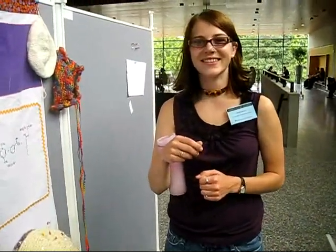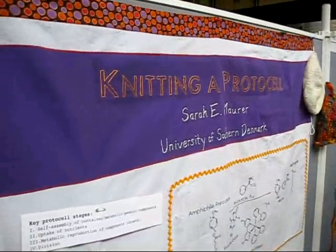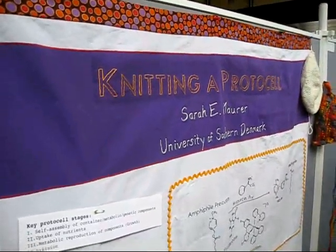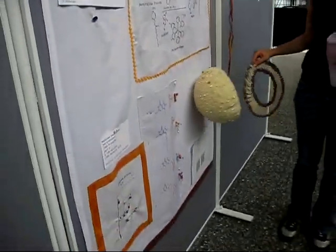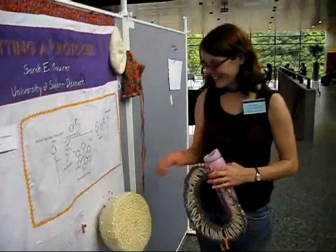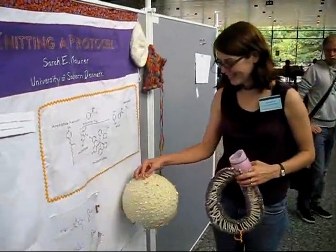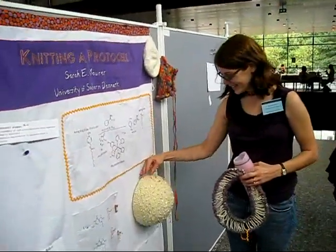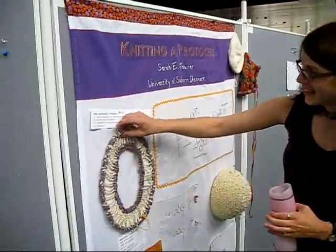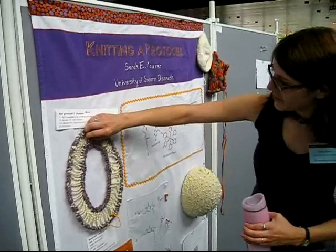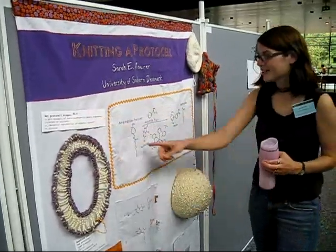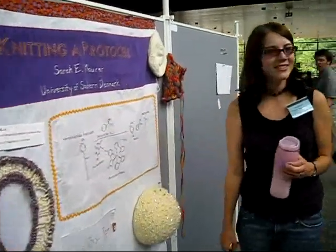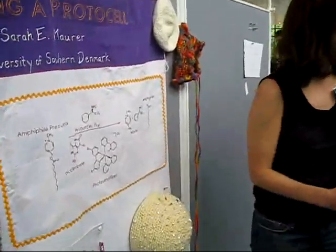This is Sarah Maurer, and she is knitting a protocell here at Artificial Life 12 — the coolest poster here. This is not the poster session.